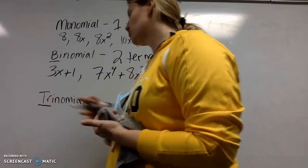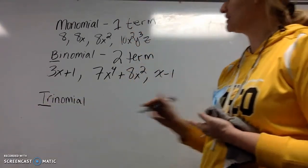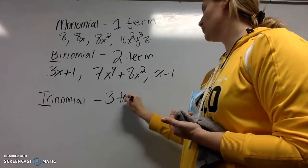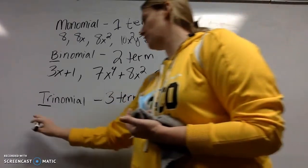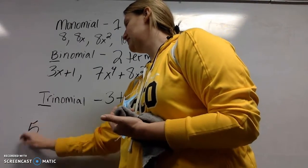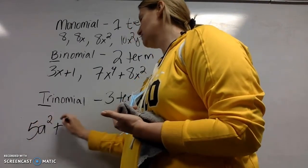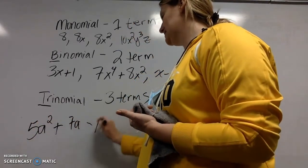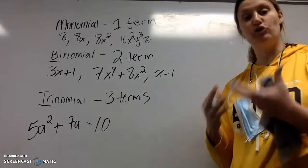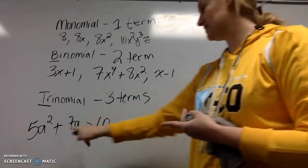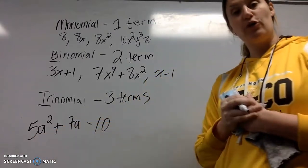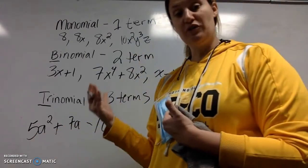And so trinomial, tri means three. Nomial means terms. So three terms. So we have 5a squared plus 7a minus 10. Anything that has three terms. So you're going to see two addition, subtraction signs that will separate those three terms like that.